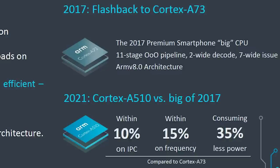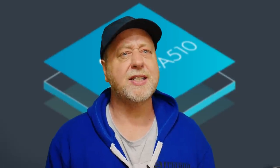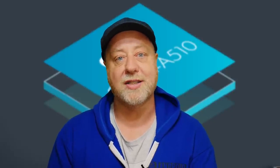If you built an A510 processor today, it will be within about 10% of the performance of the Cortex-A73, clocked almost as fast, but using 35% less power. So if you take a Snapdragon 835 chip — something in a Pixel 2 or Pixel 2 XL from 2017 — and had a modern phone with only the Cortex-A510 and no other big cores, today's phone would be almost as fast as that flagship from just a few years ago, while using 35% less power. That's absolutely amazing.